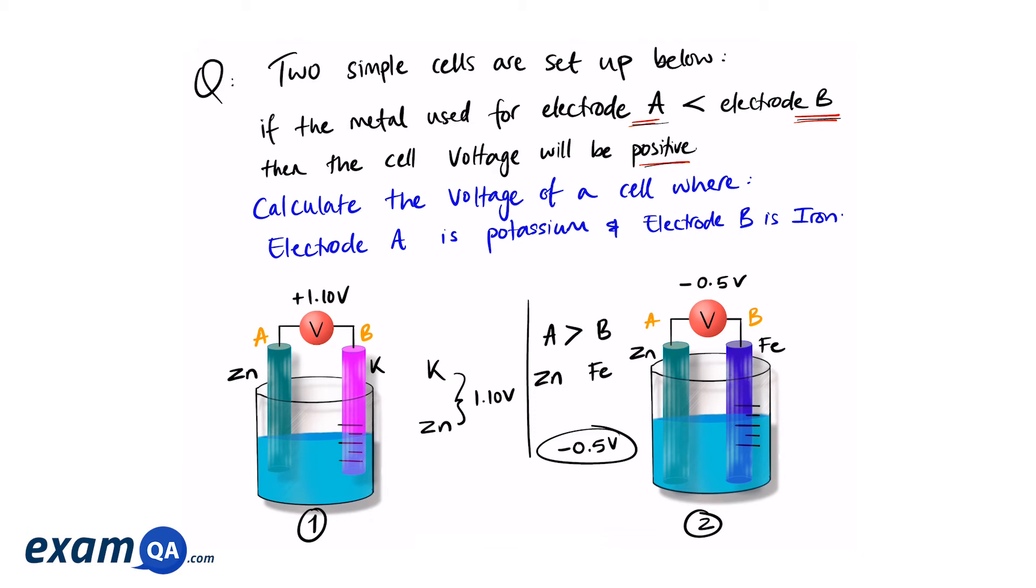So zinc is more reactive than iron. And that difference, we can call that 0.5. So going back to our scale, we're going to put iron over here, Fe. And that difference is 0.5 volts. Remember, when we're doing our reactivity scale, we're just looking for the difference in value, not the sign.